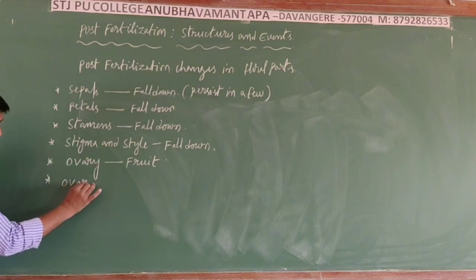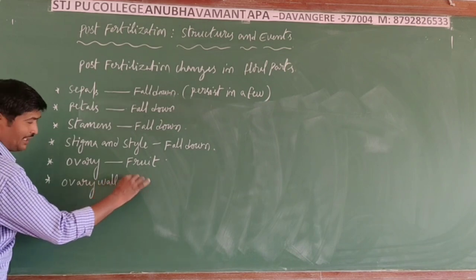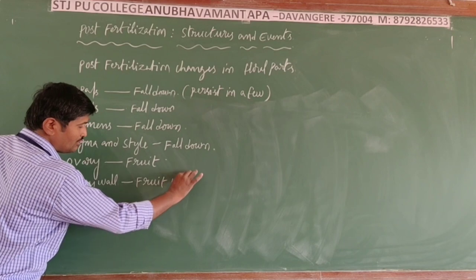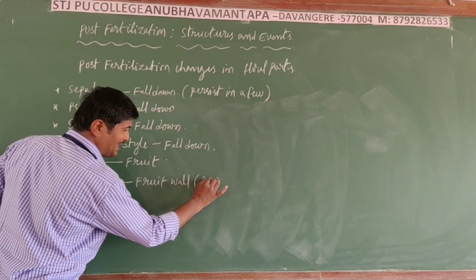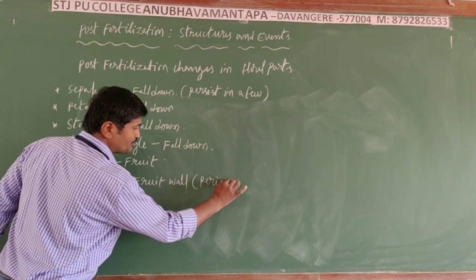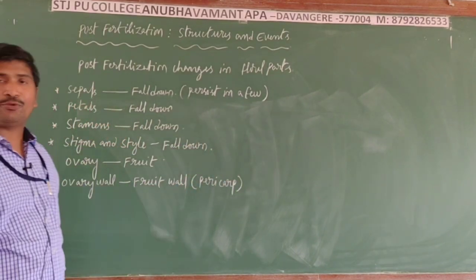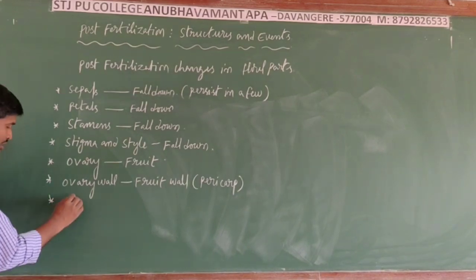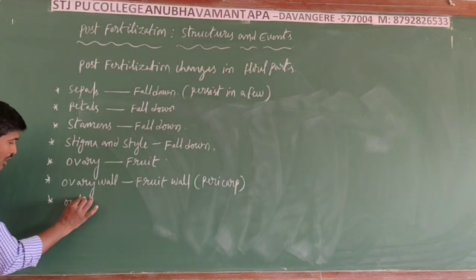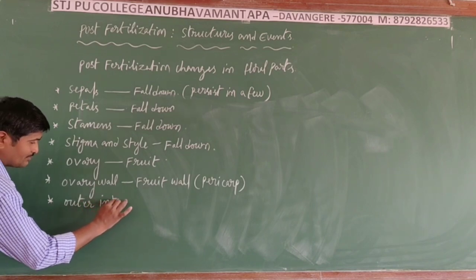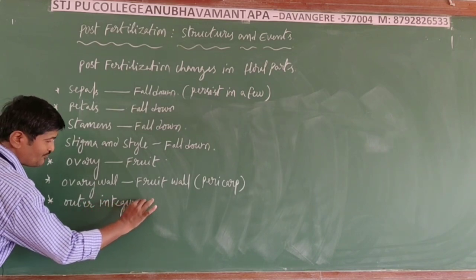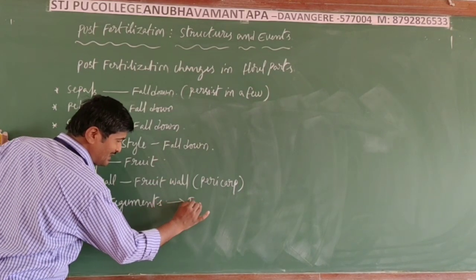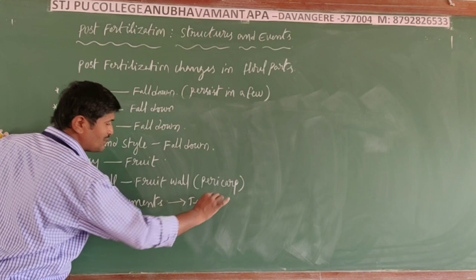The ovary wall is developed into the fruit wall, that is the pericarp. The pericarp means the fruit wall. Next, the outer integuments are developed into the testa, which is the outer seed coat.